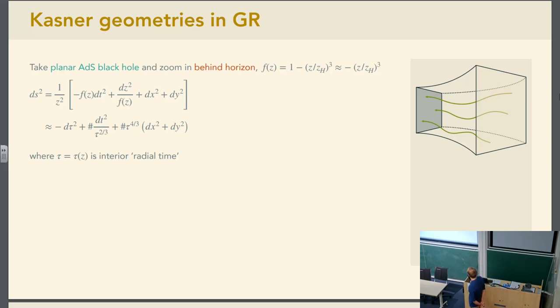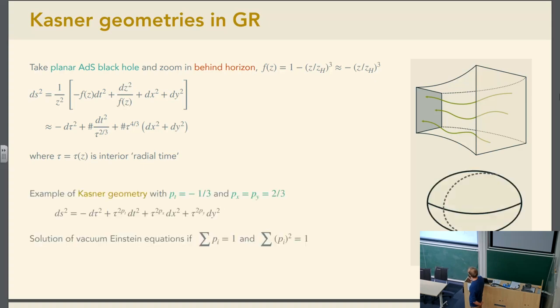From an ADS-CFT context, one way that you can easily see that these geometries appear in natural settings is by taking just a planar ADS black hole and zooming in far behind the horizon. So then approximating the geometry you get, and doing an appropriate change of variables, you get something that is in fact a Kastner geometry, far behind the horizon of a planar ADS black hole. It's a Kastner geometry with a particular value of the scaling exponents. These have to satisfy two sets of constraints for this to be a solution to the Einstein equations.